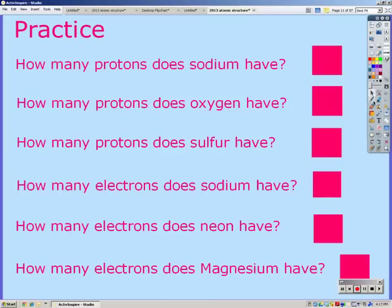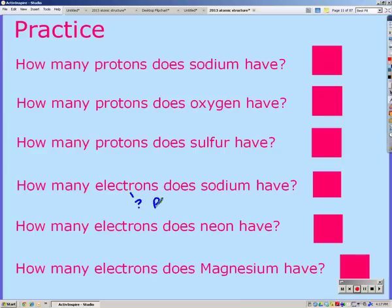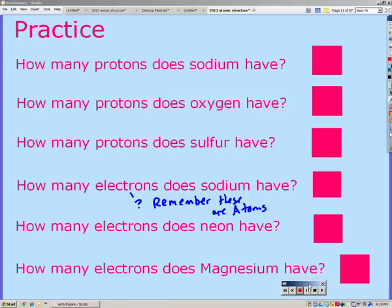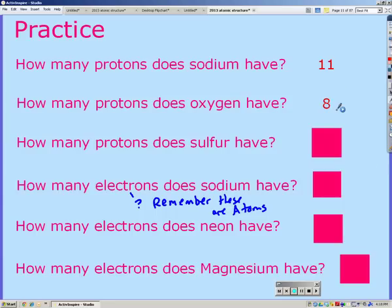So looking at your periodic table, figure out how many protons sodium has, oxygen and sulfur. Then figure out how many electrons sodium, neon, and magnesium have. For your electrons, remember that all of these are atoms, and so our protons should equal our electrons. Restart when you have your answers. So for sodium, you should have got an 11. Oxygen, 8. And sulfur, 16.